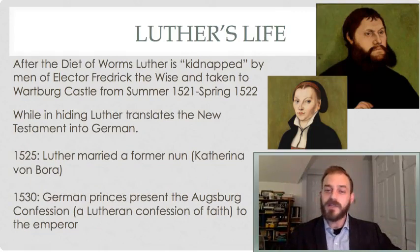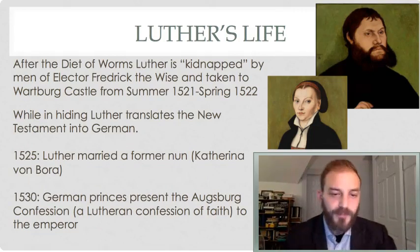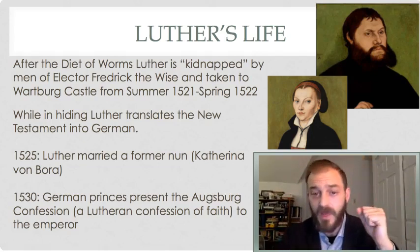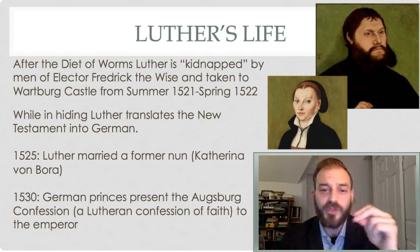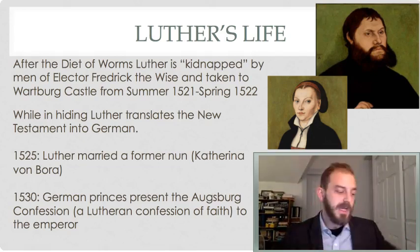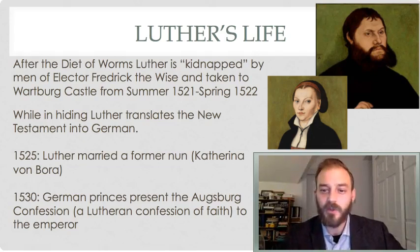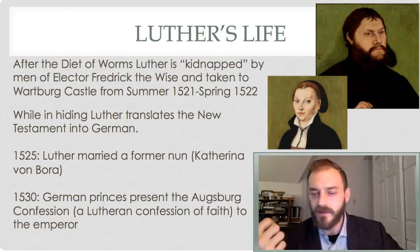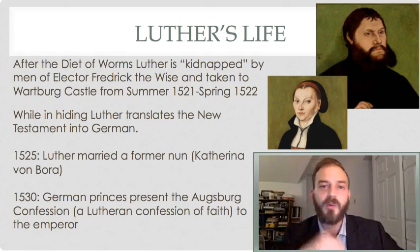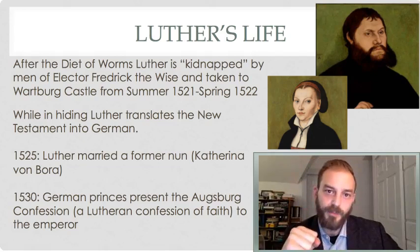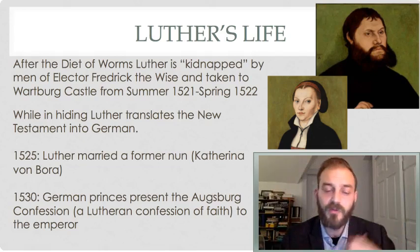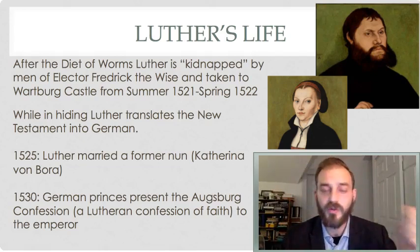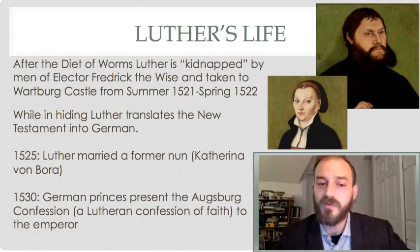After the Diet of Worms, Luther was in fact kidnapped by men of Elector Frederick and taken to the Wartburg Castle for his own safety — he had been excommunicated and could be put to death at any moment. There he grew a beard, took the title 'Junker Jörg,' and began to write. Luther decided what he must do was translate the Bible into German so it could be received by the people. He used a text produced by Erasmus, who had recently produced a new edition of the Greek New Testament, and from this Luther produced the German Bible — one of the most influential works for the foundation of modern German.